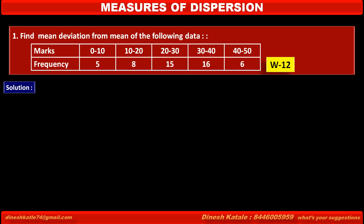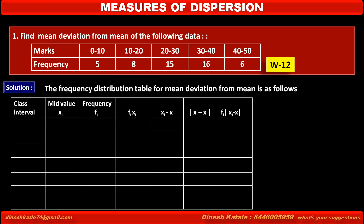See the solution: how to find mean deviation from mean of the given data. The frequency distribution table is as follows. The first column is for class interval, the second column is for mid-value xi of each interval, the third column is for frequency fi, the fourth column is for the product fi·xi, the fifth column is for the deviation xi minus x̄ where x̄ is the mean, the next column is for the absolute value |xi − x̄| to get a positive value, and the last column is for fi·|xi − x̄|.